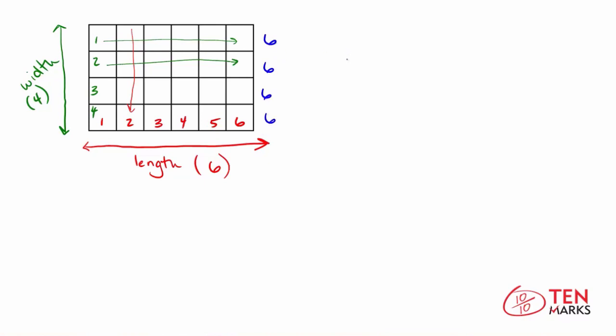And when you skip count, six plus six gets you to 12. So you go six, and then six more is 12. Six more than 12 is 18. And six more than 18 is 24. So that means there are 24 small squares contained in this larger rectangle.